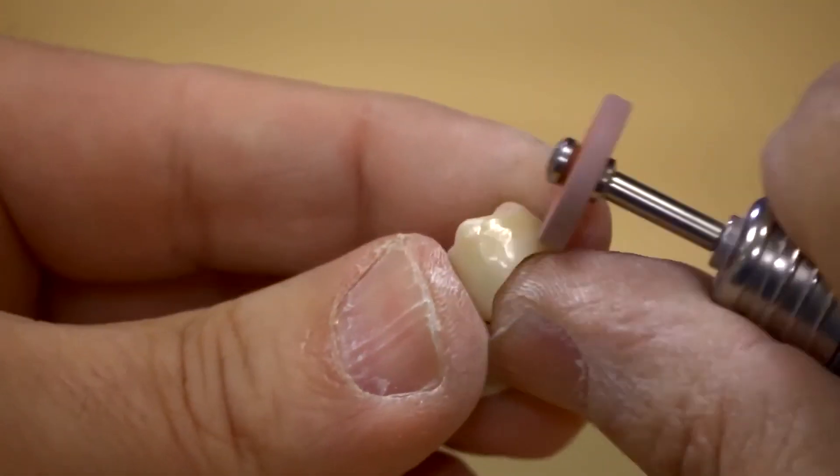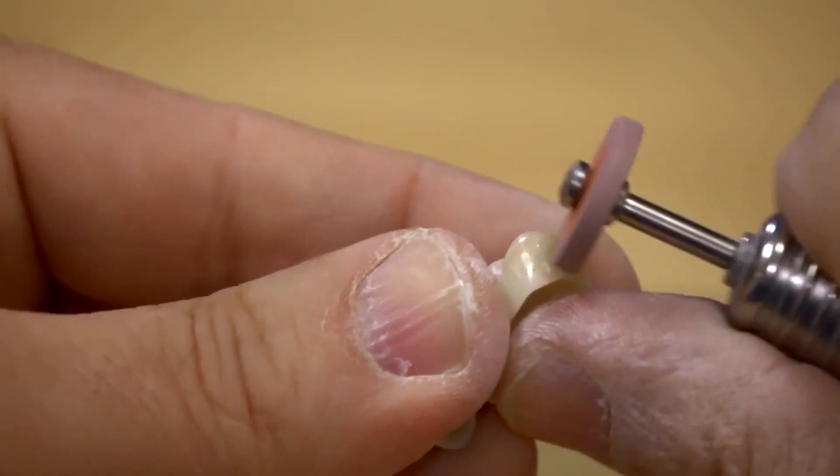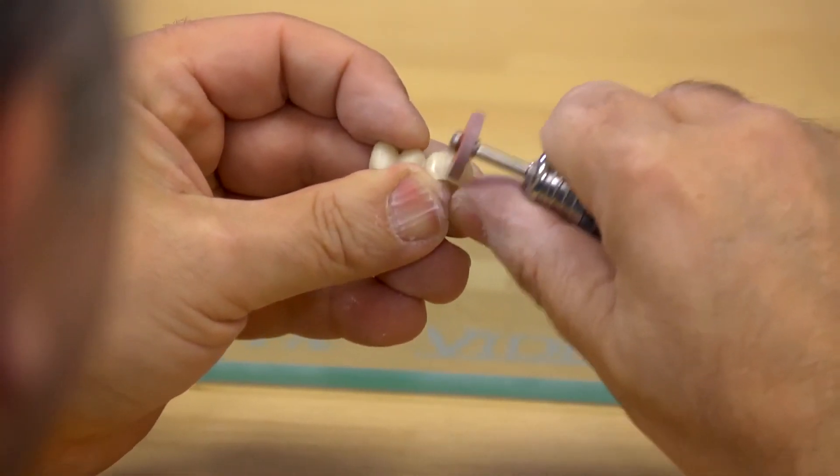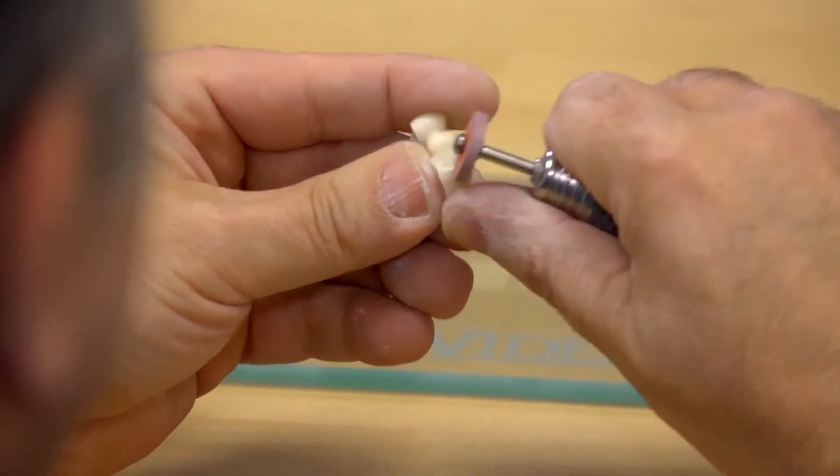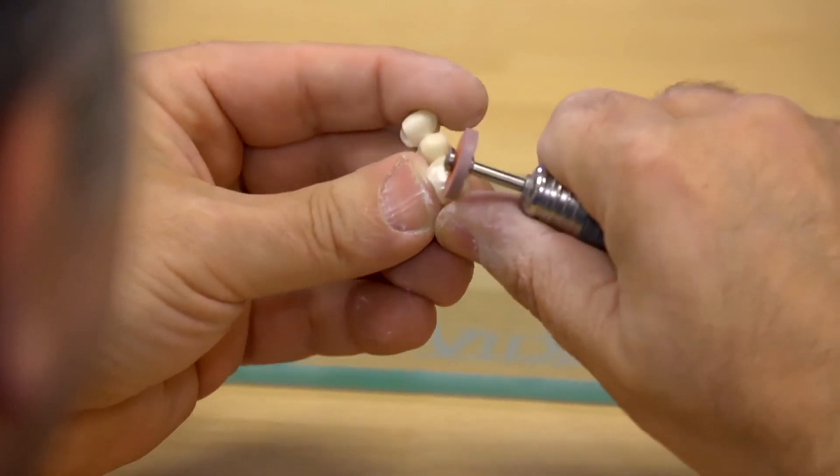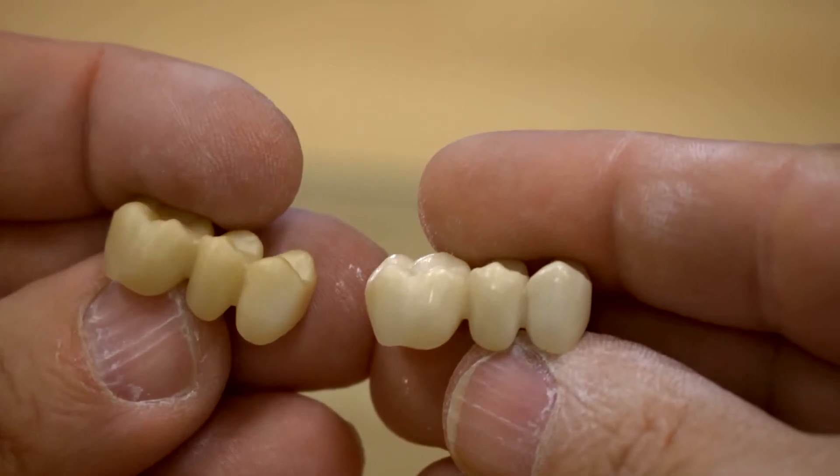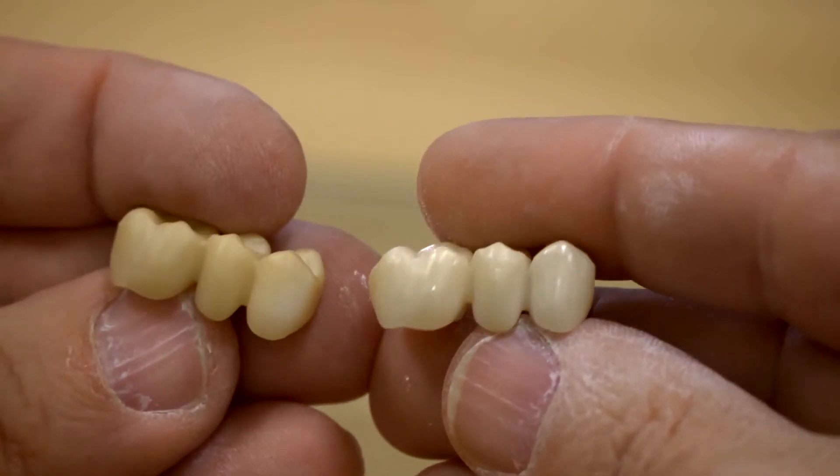The sintered restoration should also be polished prior to applying enamel coating in order to prevent abrasion to the antagonist following potential loss of shine. Inchorus TZI can be polished with all standard polishing agents for zirconia ceramics. Here's how the crown should look after polishing.